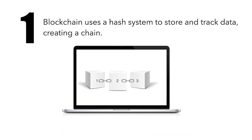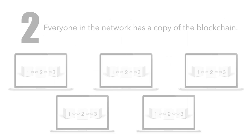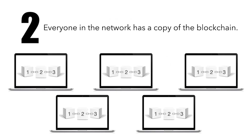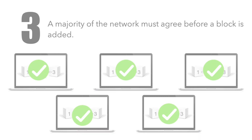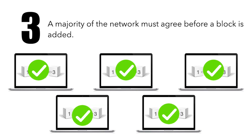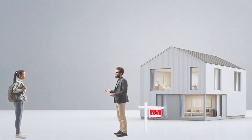In summary, blockchain uses a hash system to store and track data, creating a chain. Everyone in the network has a copy of the blockchain, and a majority of the network must agree before a new block is added.